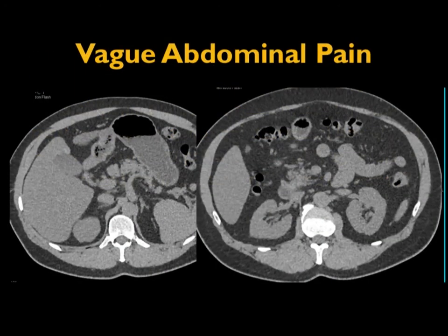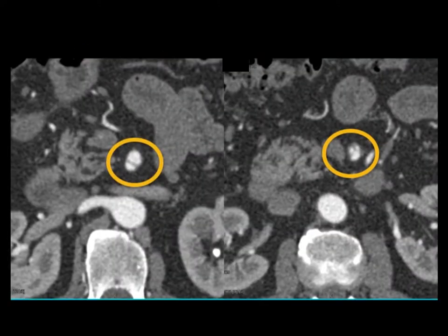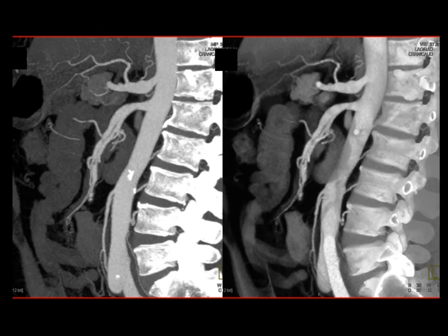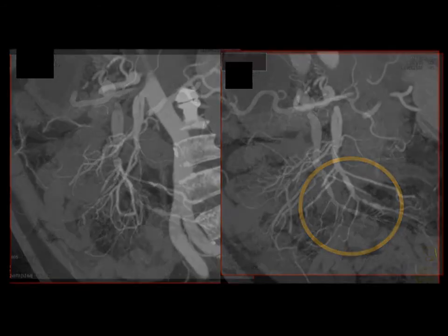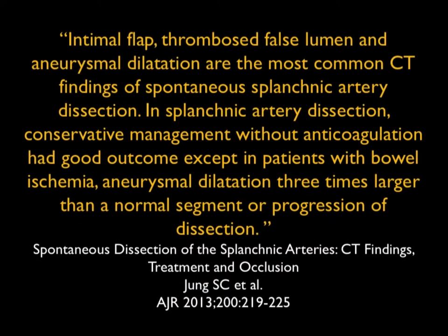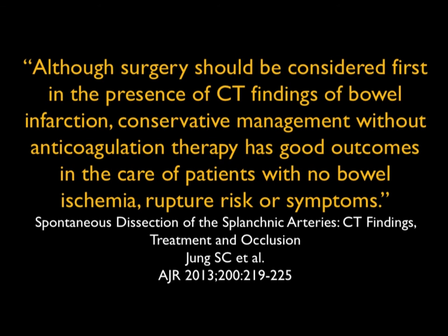One last topic: vague abdominal pain, non-contrast is unimpressive on a stone protocol. With contrast, look at the SMA — there's a dissection, which you can see on further views showing the length of the dissection. What's called spontaneous dissection of the SMA: intimal flap, thrombosed false lumen, and aneurysm dilatation are the most common findings. In SMA dissection, conservative management has good outcomes except in patients with ischemia. It's important not to rush to place stents or start anticoagulant therapy; surgery should be considered first in the presence of bowel infarction, but conservative management without anticoagulation has had good outcomes.